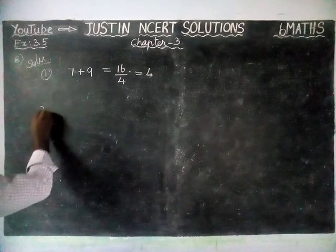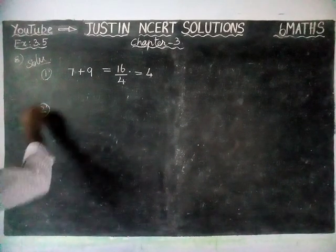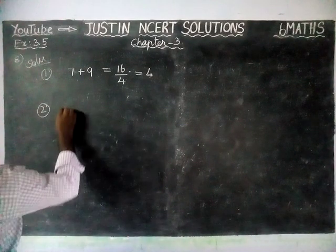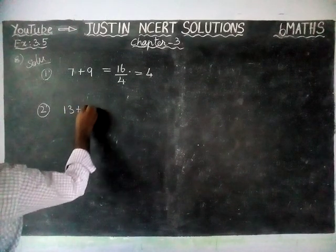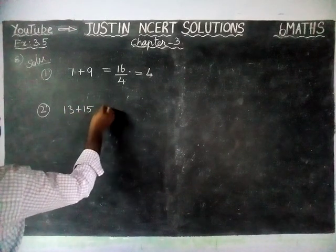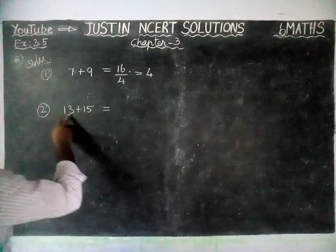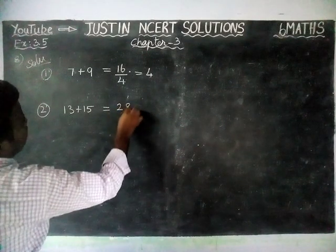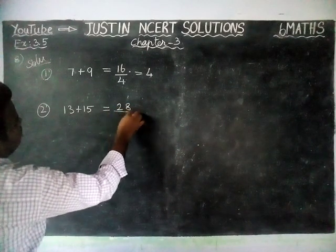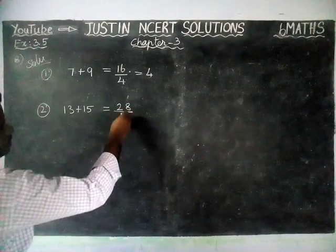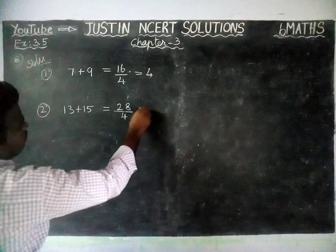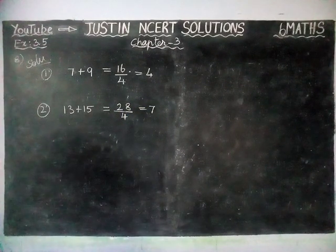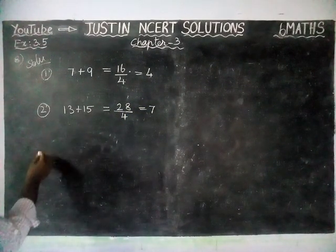Next, we are going to see the second example. 13 plus 15 is equal to 28. Divided by 4 — check it: 7 fours are 28. So that is also divisible by 4.